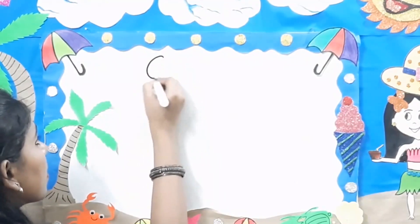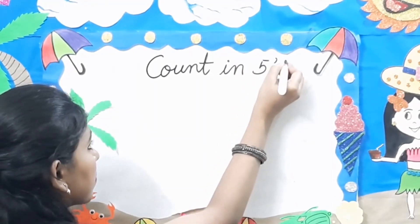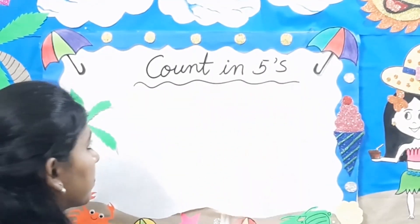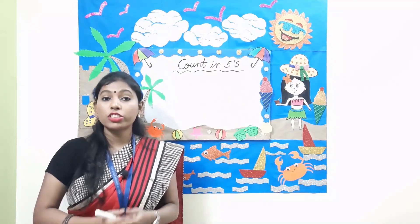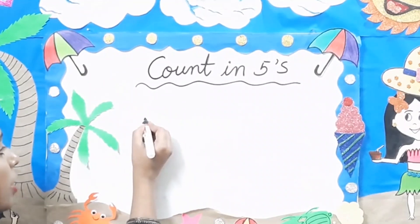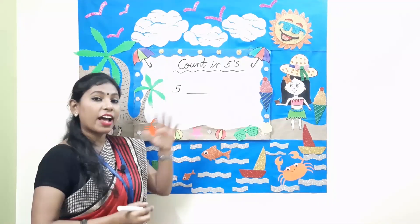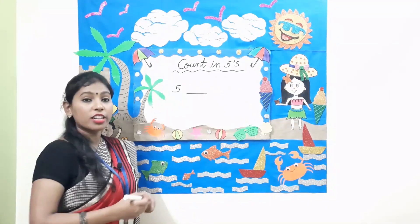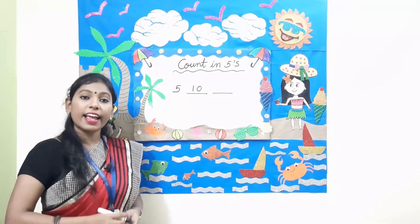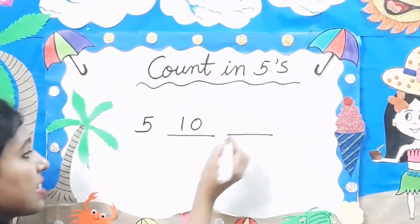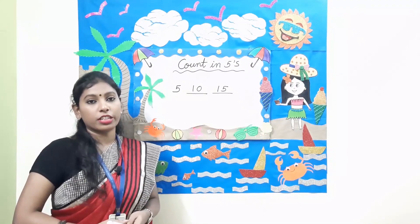Now we will go to our next topic: count in 5s. It is skip counting. For example, if I write the number 5, the next number — remember, you have to add 5 to it. So 5 plus 5 is 10. Then the next number after 10, again you add 5, that is 15. This is how you do skip counting or count in 5s.